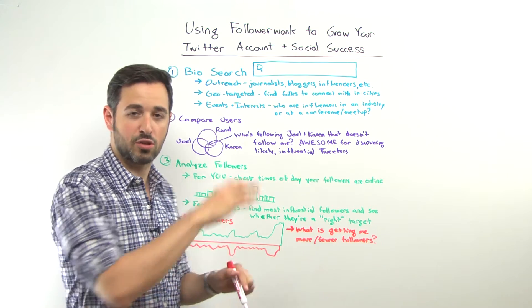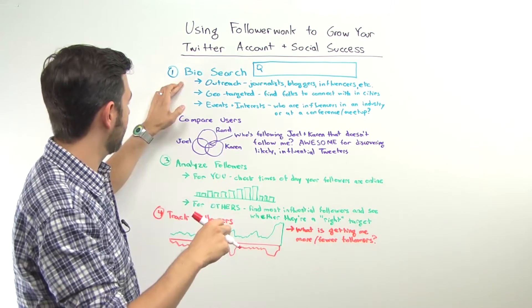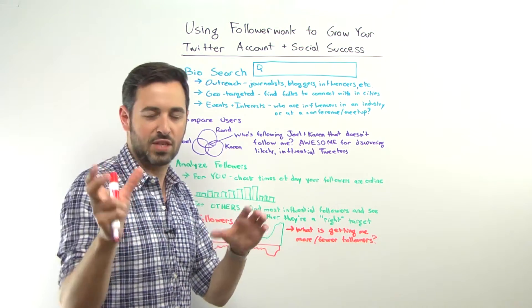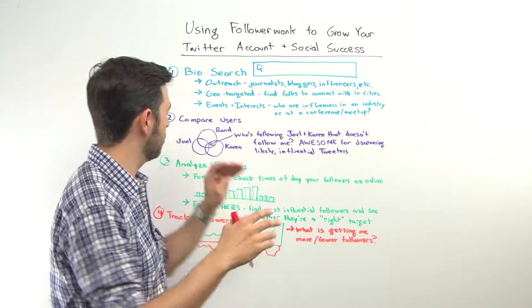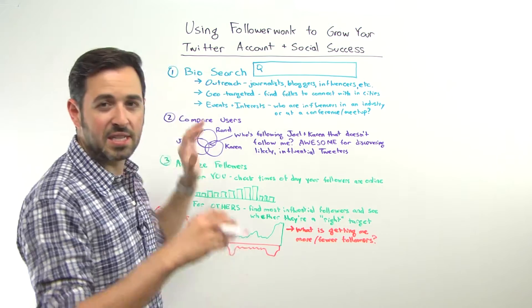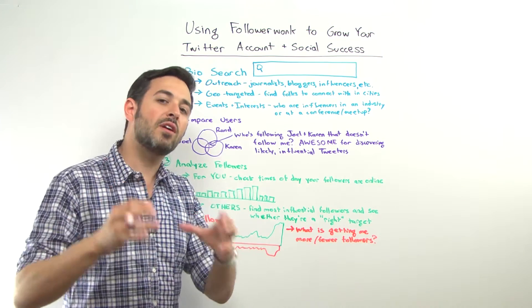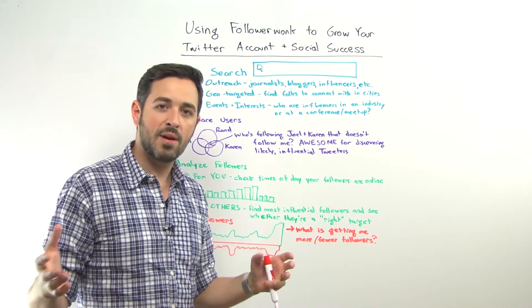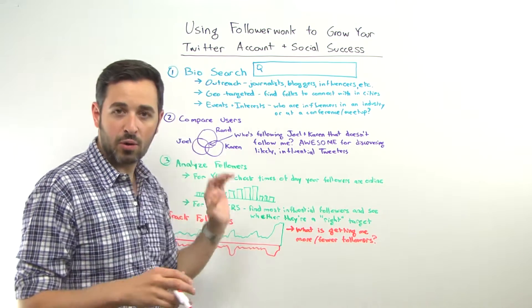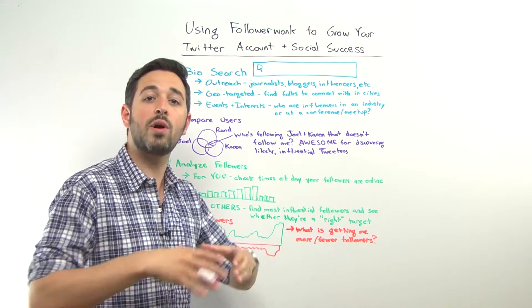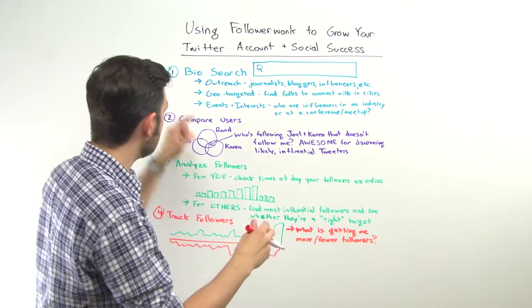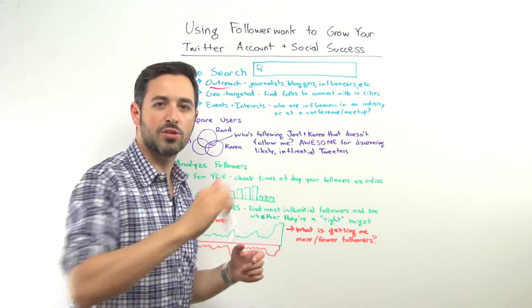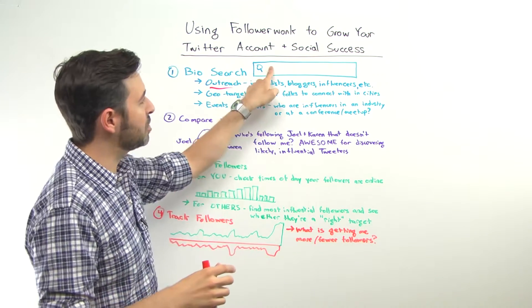If you go to the Followerwonk product, you'll see four tabs: search, compare, analyze, and track. There's actually a fifth tab that I'm not going to mention today, but you can go check it out too. Number one, the first one is the bio search feature. This is very cool for outreach and discovery. If you think of Open Site Explorer as a look into the link graph of the web, the bio search inside Followerwonk is really a look into the Twitter user graph.